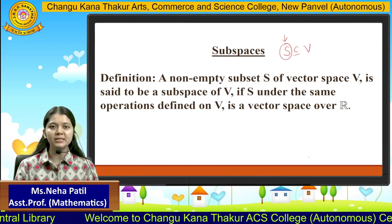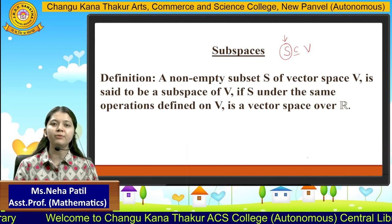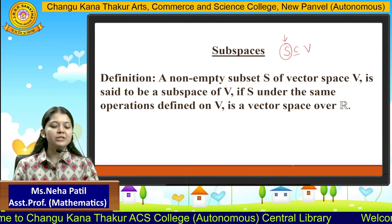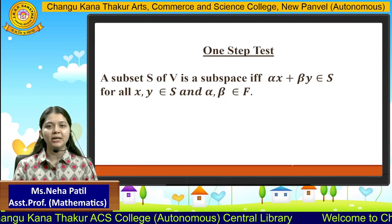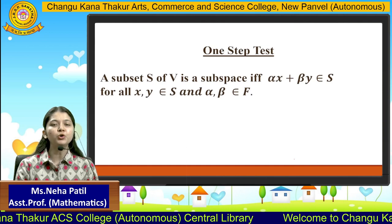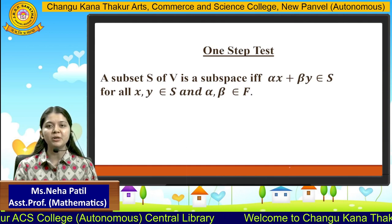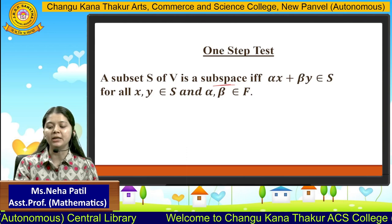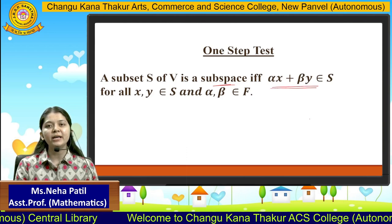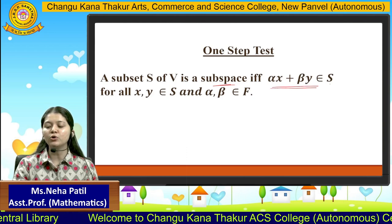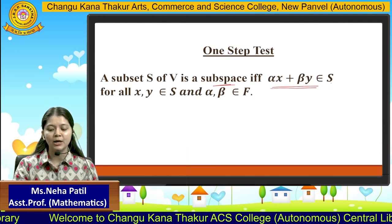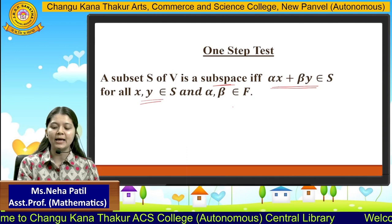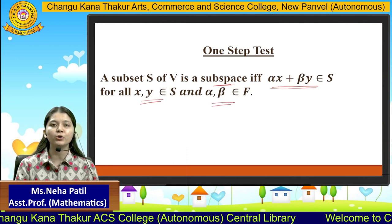But in order to prove this as a vector space, it also needs to satisfy all the 10 properties and it will become a very lengthy process. So instead of that, we have one step test which says that in order to prove any subset of a vector space V to be a subspace, it has to satisfy only one property: alpha x plus beta y should belong to that particular subset S, where x and y both belong to S and alpha and beta are scalars belonging to any set.